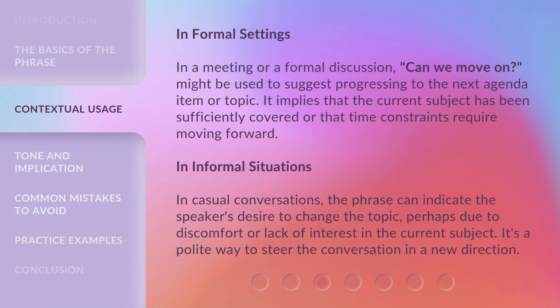In formal settings — such as a meeting or a formal discussion — 'can we move on' might be used to suggest progressing to the next agenda item or topic. It implies that the current subject has been sufficiently covered, or that time constraints require moving forward. In informal situations and casual conversations, the phrase can indicate the speaker's desire to change the topic, perhaps due to discomfort or lack of interest. It's a polite way to steer the conversation in a new direction.